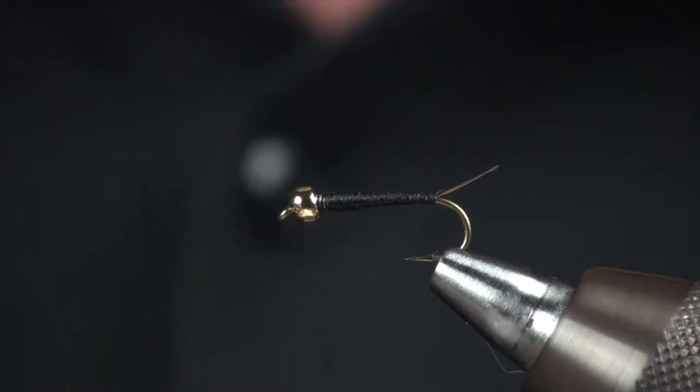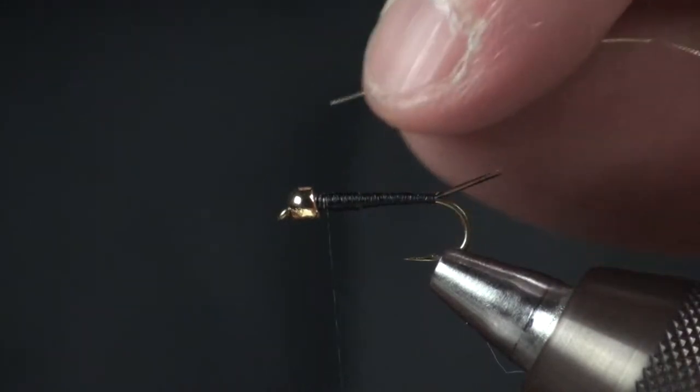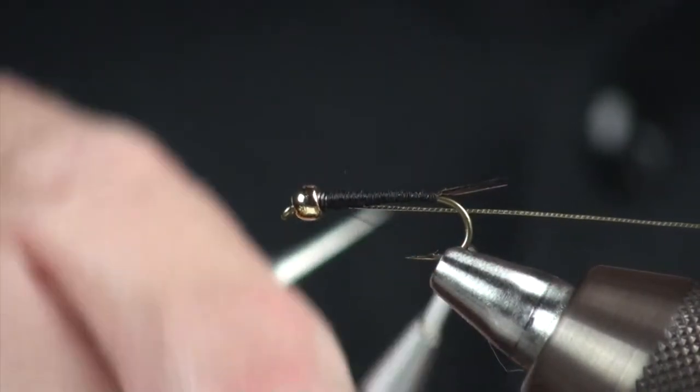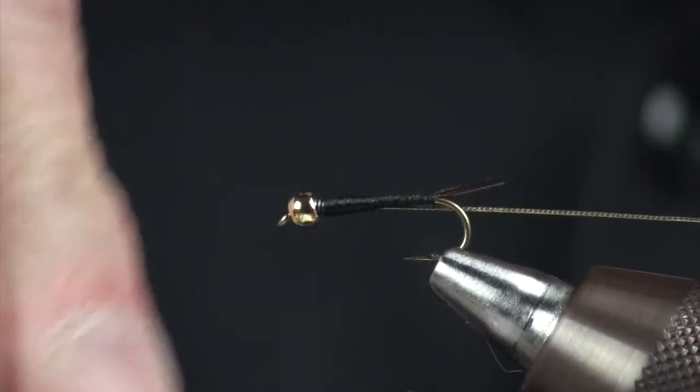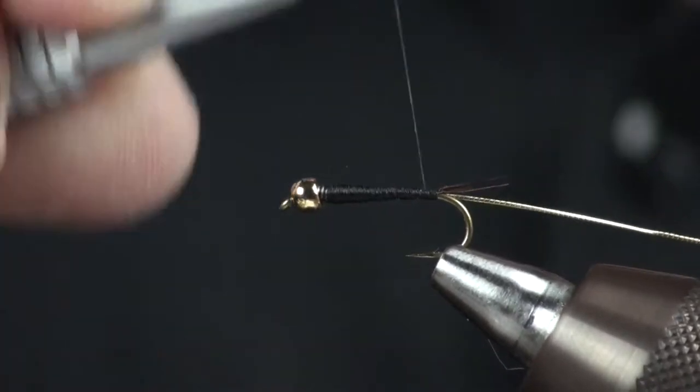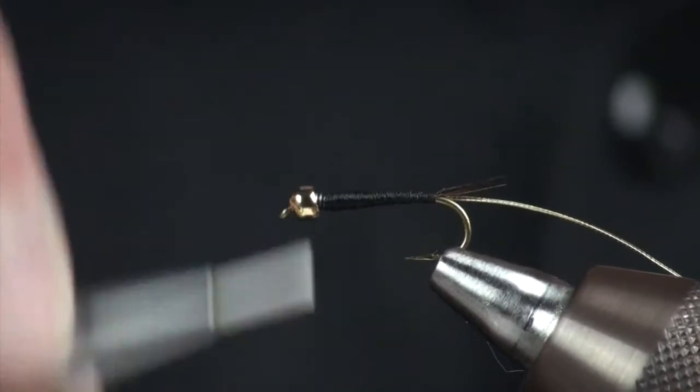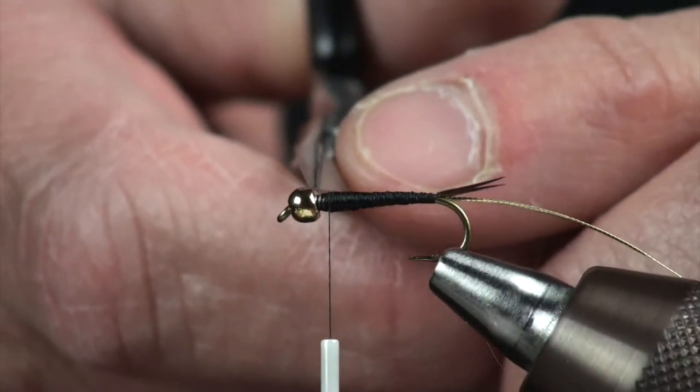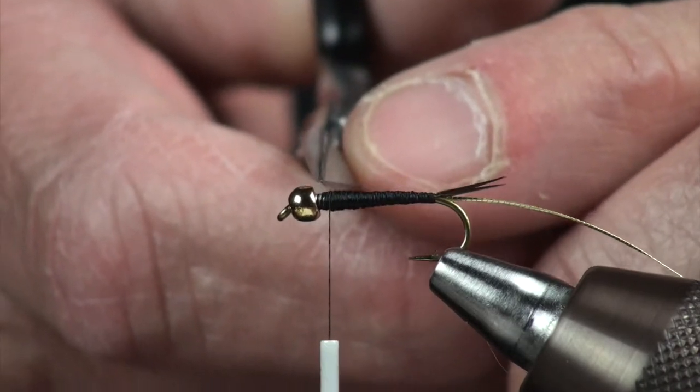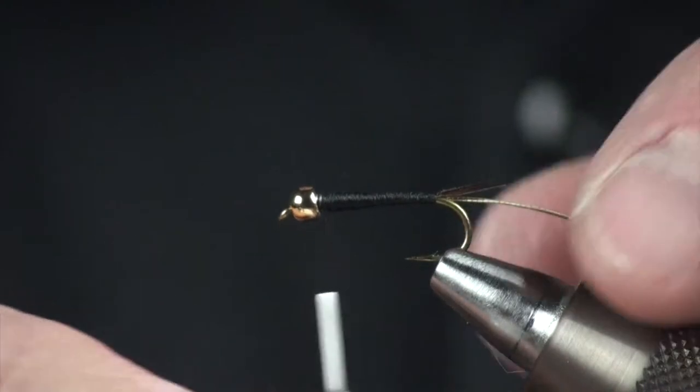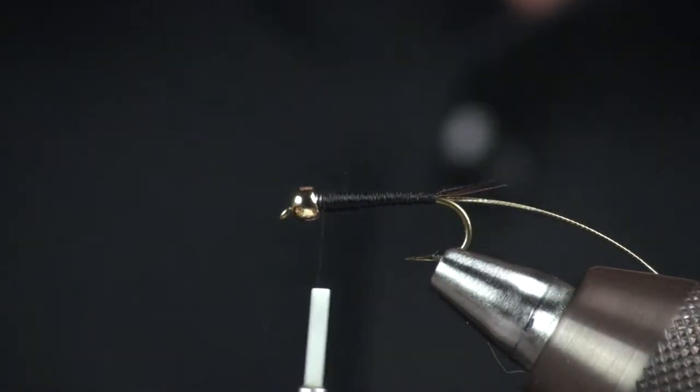Next thing I'm going to do is add in some Lagartun tinsel. I'm going to lay that in on my side of the hook. And this is going to be my ribbing for this fly. Bring it right down to the tail again. And I can quickly bring it right back up. Another thing I want to mention here is that as I've been wrapping all my thread and materials in, I've been leaving a little gap here between my bead and all of these wraps. Just an ever slight wrap. That's going to help us here at the end of this fly.